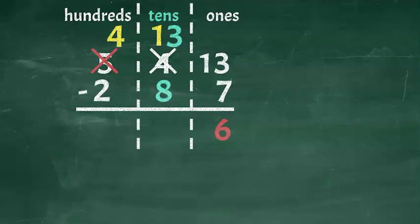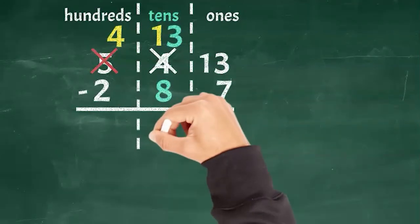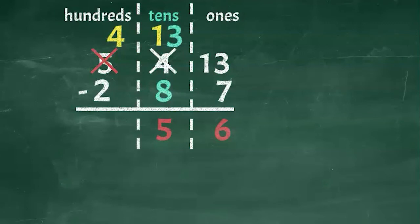13 minus eight equals five. I have five tens, so I will write a five below the ten stack. Great job, I think you've got the hang of this. Now we just have the hundreds place left to subtract. It looks like we do not need to borrow.